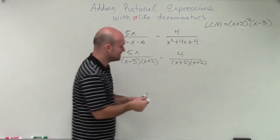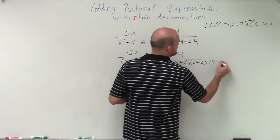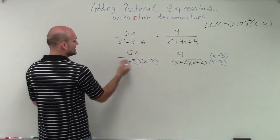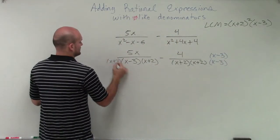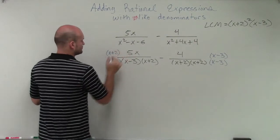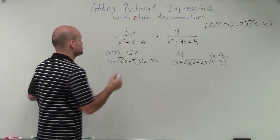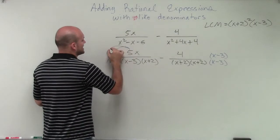So now, if I already have x plus 2, the only thing extra I need over here is an x minus 3 over x minus 3. And over here, I would need an extra x plus 2. So now, when doing this, it's very important for us to apply our distributive property. We're multiplying this 5x times both terms.